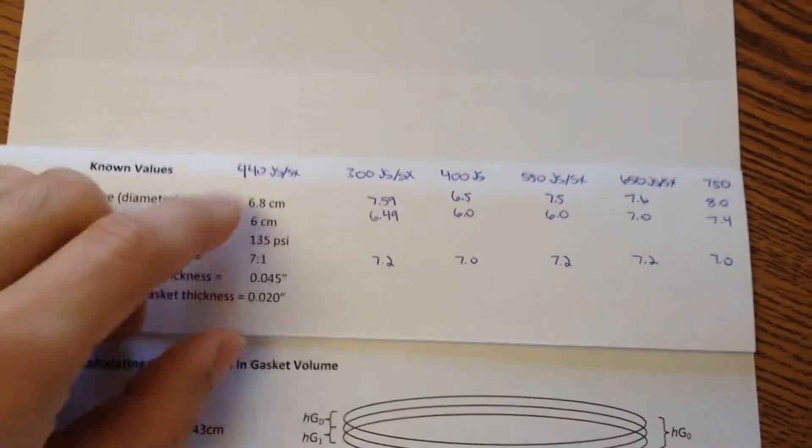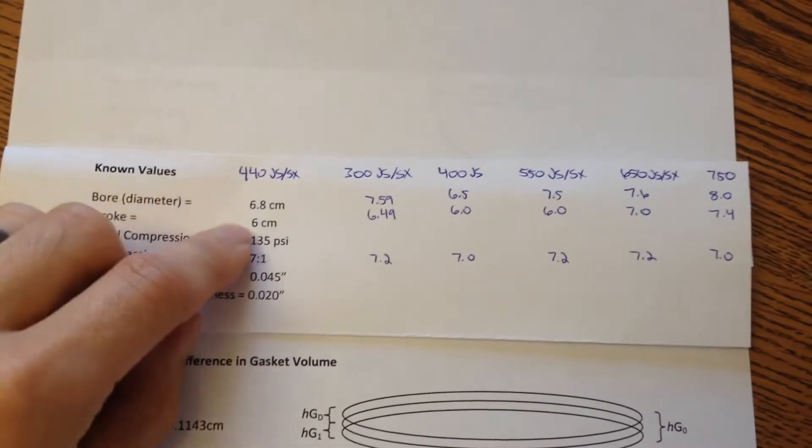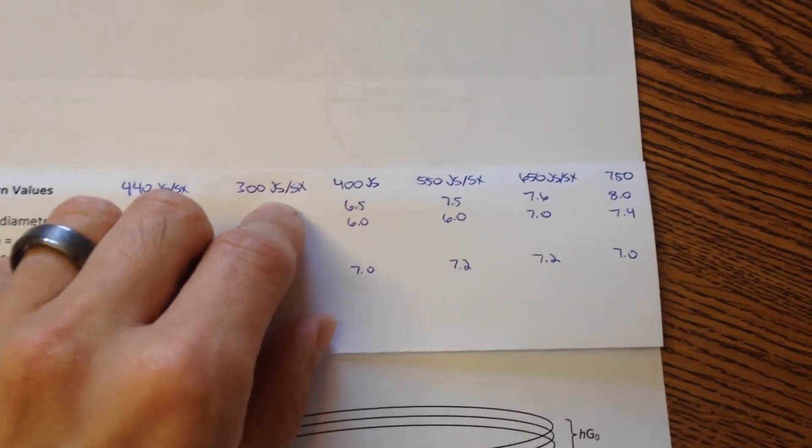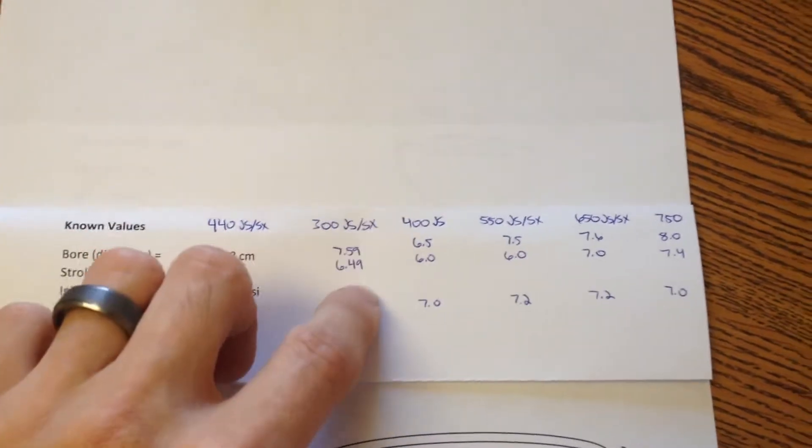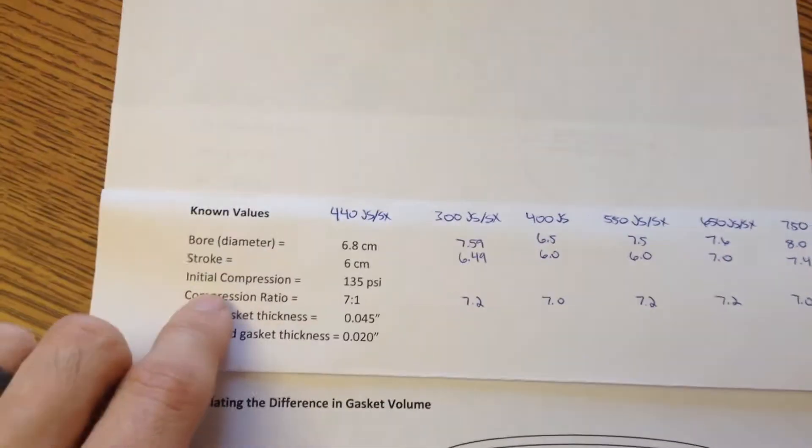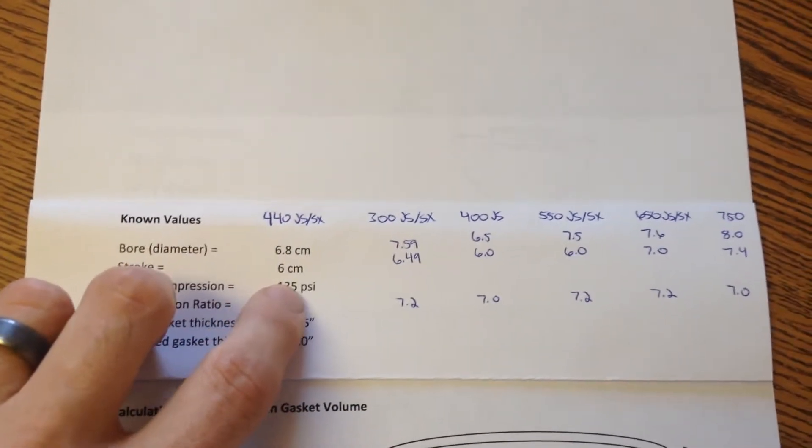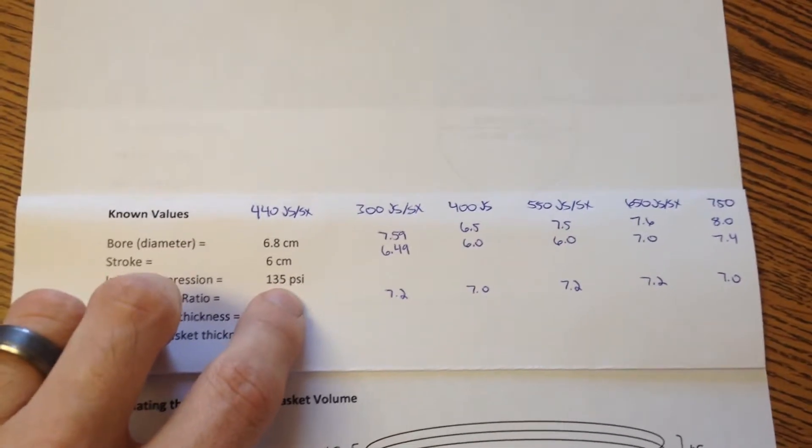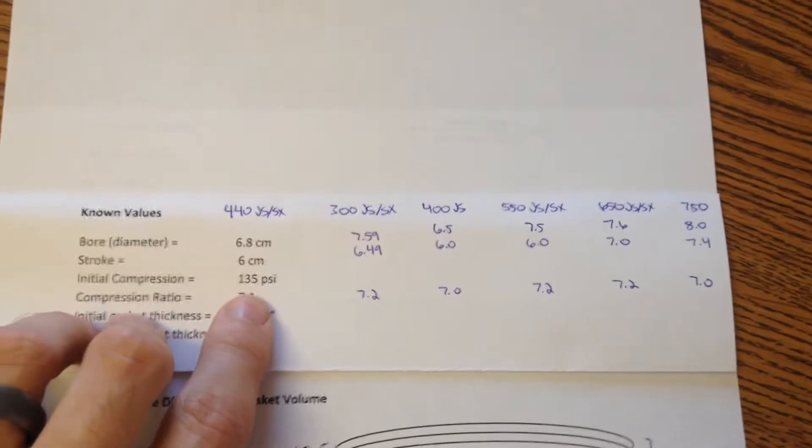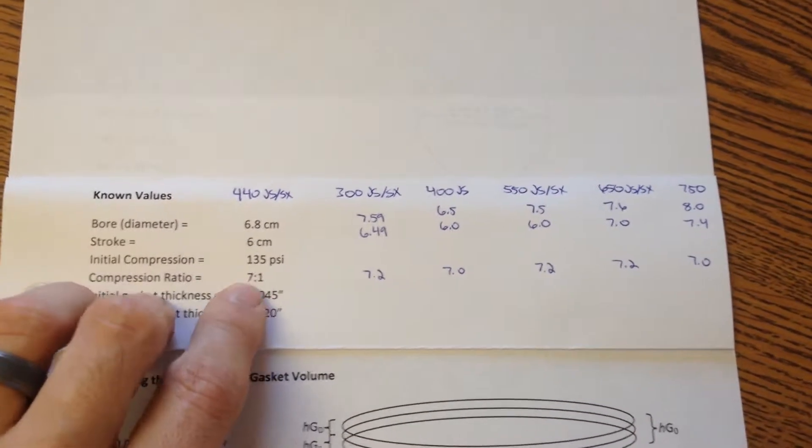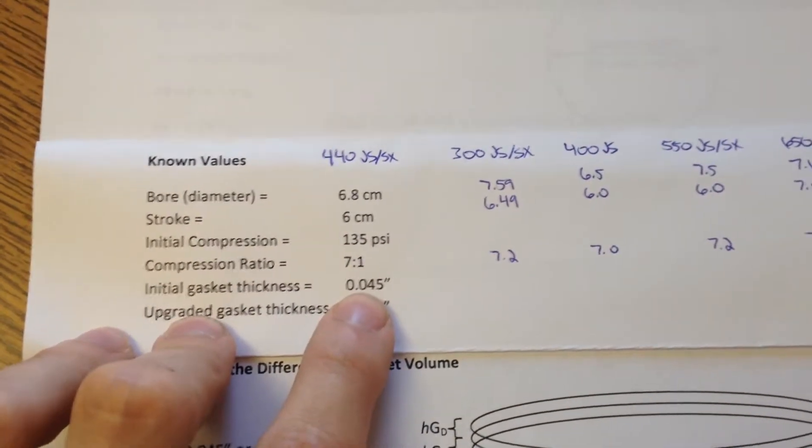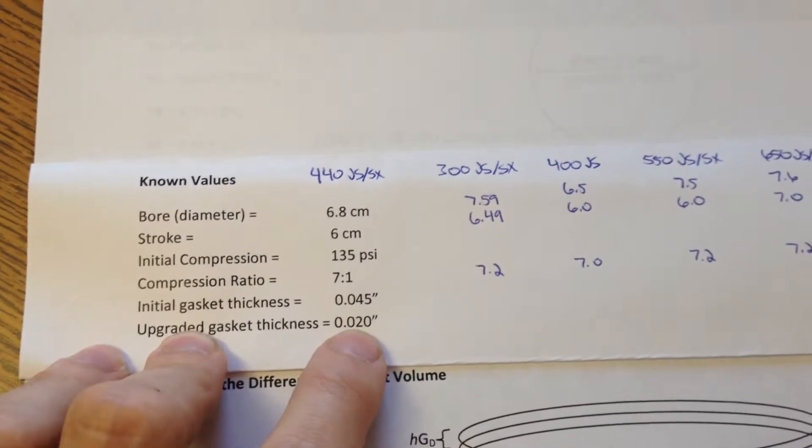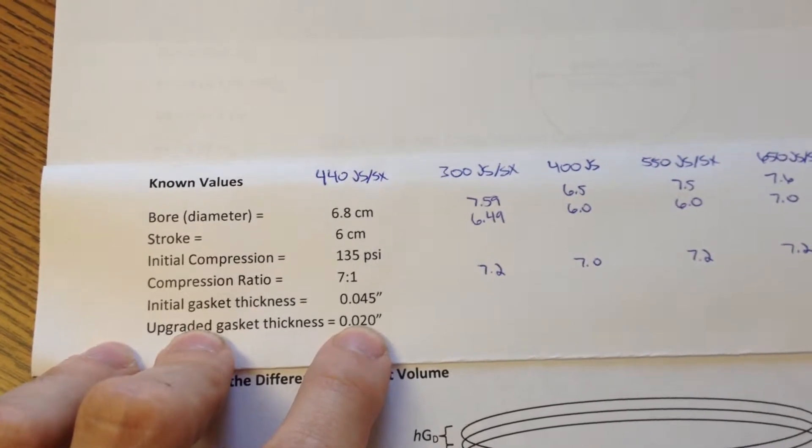And here is actually an updated list. This is for the 440 JS or SX ski that I'll be doing calculations for. But if you want to calculate for say a 300, a 400, 550, 650, or 750, just substitute these three numbers that you're seeing here with the numbers you'll see in these columns. And also substitute your initial compression with whatever the compression is that you're getting off of your ski. If you don't have a compression tester and you just want to approximate using the value of 120 or 140 or somewhere in there is appropriate. If you have different size gaskets you can simply substitute these numbers. However, 0.045 is fairly common for a fiber gasket and 0.02 is typical for a copper style gasket.